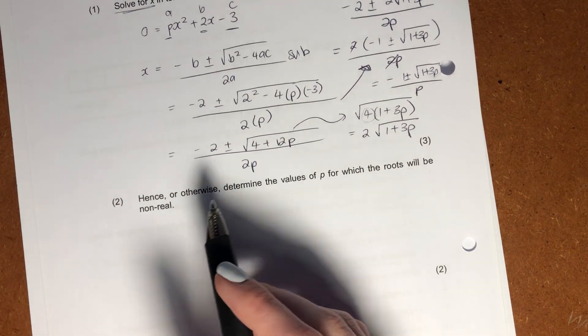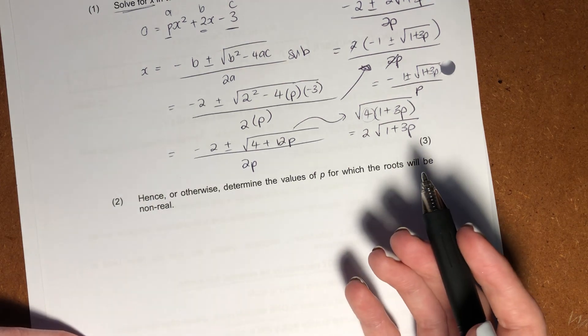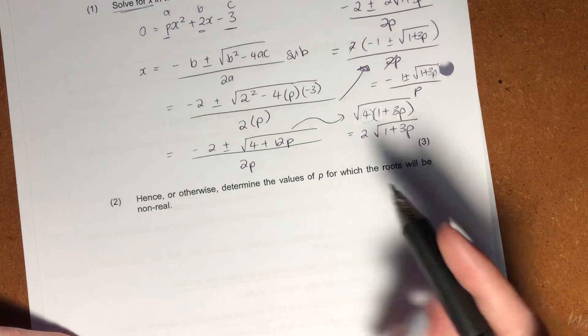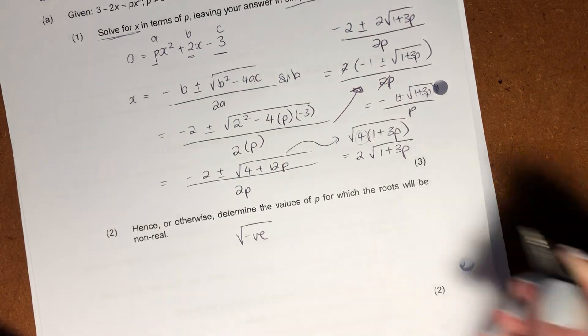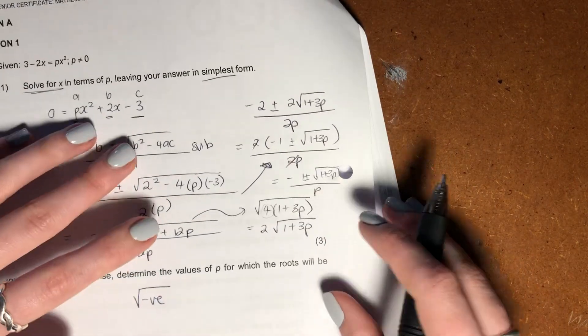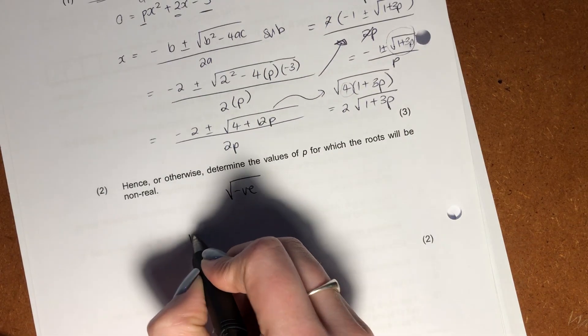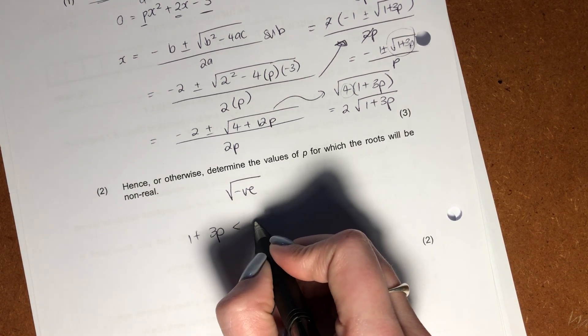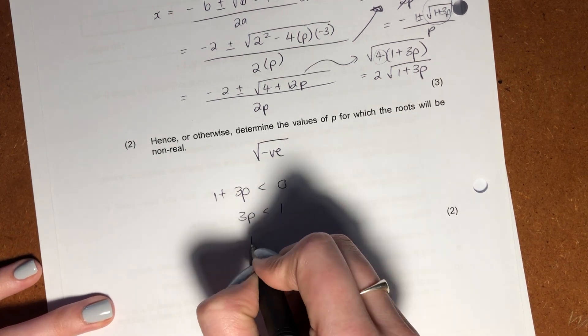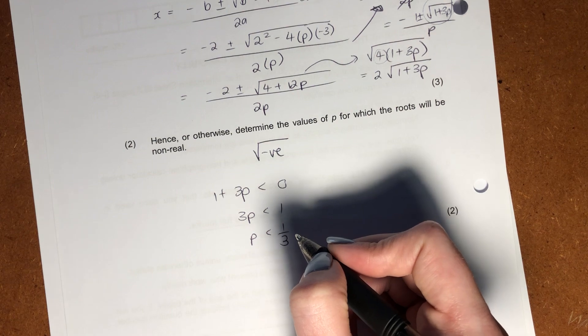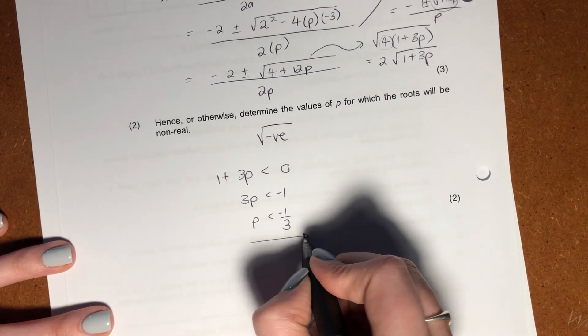Let's then go to our next question. It says, hence or otherwise, determine the values for p for which the roots will be non-real. Now what it's testing here is can you actually go and use your quadratic equation and can you interpret it? What does non-real mean? It means generally that you can have the root of a negative number. So over here, where is the root? There's our root there. We want that to be a negative number underneath that root. So we're basically going to say, well, 1 plus 3p has to then be less than 0. It has to be negative.